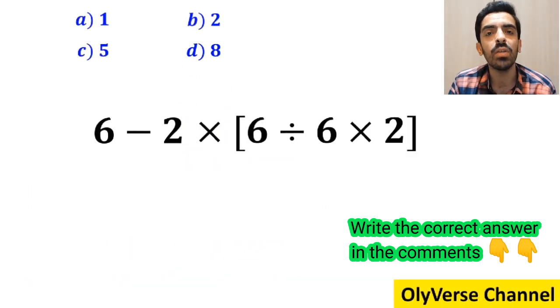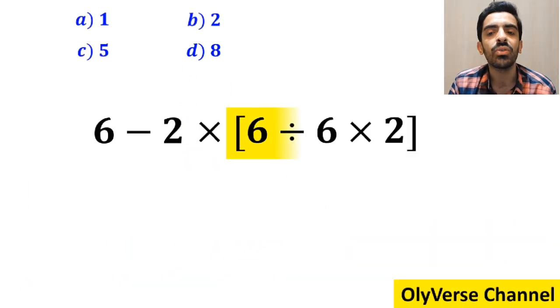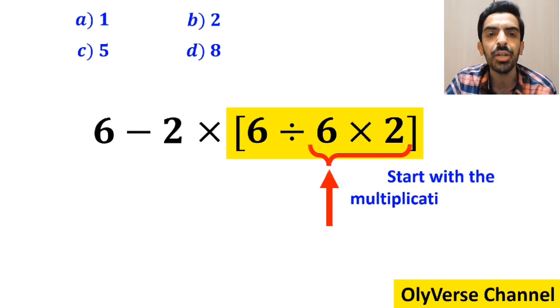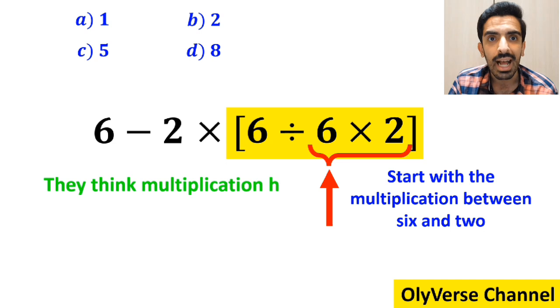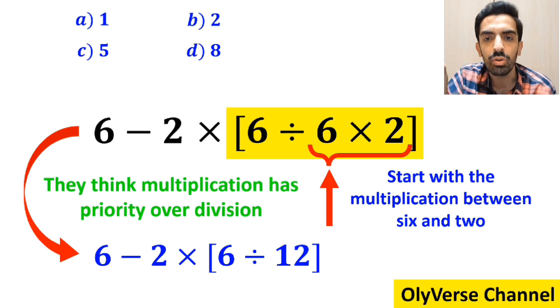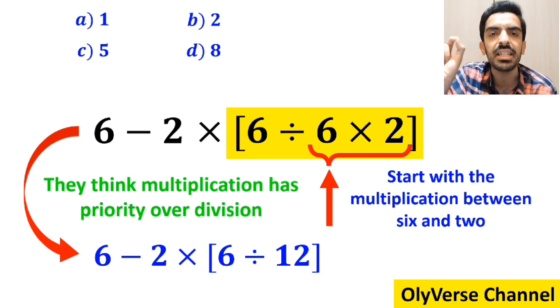Also, some other people to solve this question first go straight to the expression inside the brackets and start with the multiplication between 6 and 2, because they think multiplication has priority over division. So instead of the entire expression, they write 6 minus 2 times 6 divided by 12 inside the brackets.